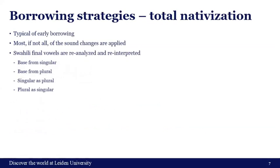Borrowings can meet three fates. Total nativization applies especially to early borrowings. Words can be nativized by reinterpreting a Swahili singular as a singular again in the Iraqw languages, or by interpreting a singular as a plural, or a plural as a singular, or by taking the plural and basing the singular or singulative on the borrowed plural form.